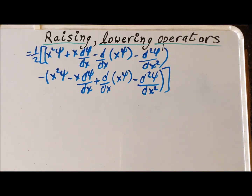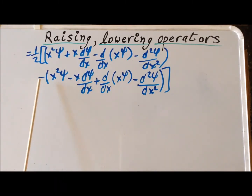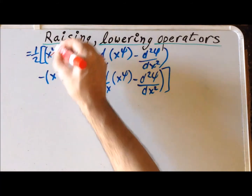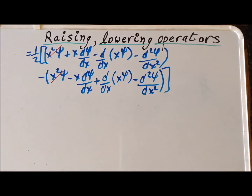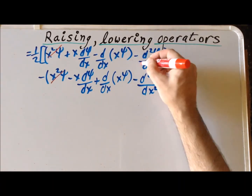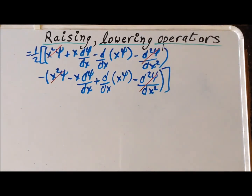We notice the great similarity of the terms in the first expression and the terms in the second expression. Since they are linked by the minus sign, x²ψ minus x²ψ cancels, and similarly the second derivative terms also cancel. So thankfully, starting with eight terms, we have now reduced the problem down to four terms.